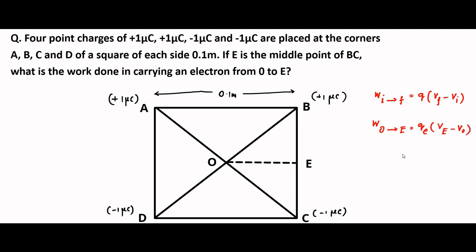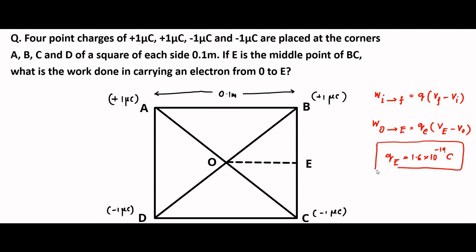Q_E we know is 1.6 into 10 to the power minus 19 coulomb. We have to calculate V_E and V_O — the potential at point O and potential at point E.